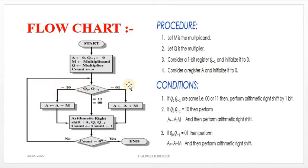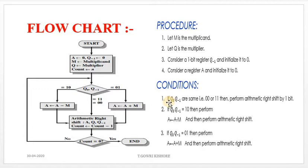From this part onwards, we apply the conditions. The first condition: if Q naught and Q minus 1 are the same — that is, 0 0 or 1 1 — then we perform an automatic right shift by 1 bit. Q naught is the least significant bit of the Multiplier, and Q minus 1 is the 1-bit register.